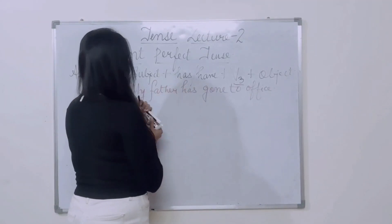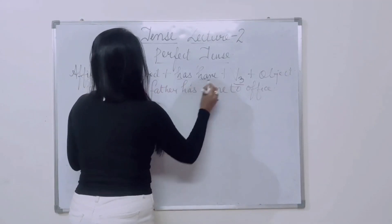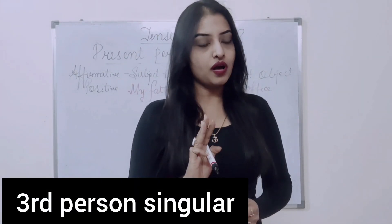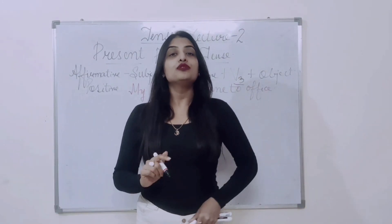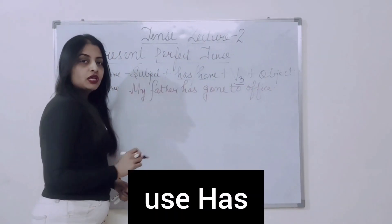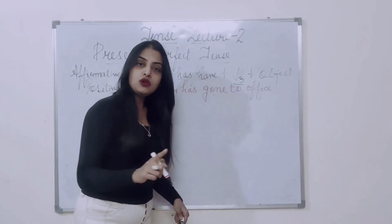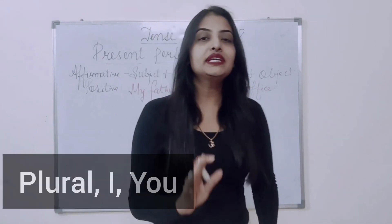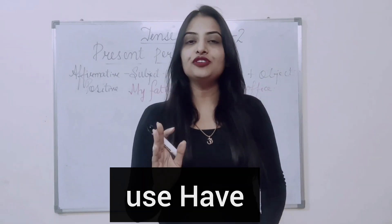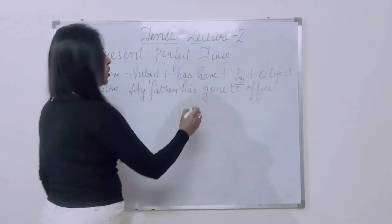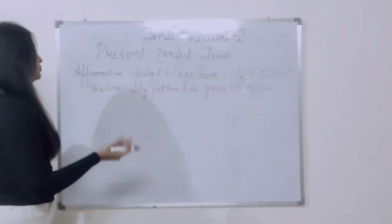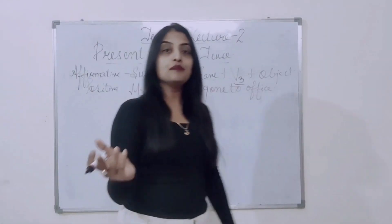Why two options — has or have? Whenever your subject is third person singular, use has. When your subject is plural, I, or you, use have — along with V3, the past participle form. So: My father has gone to office — मेरे father office जा चुके हैं.